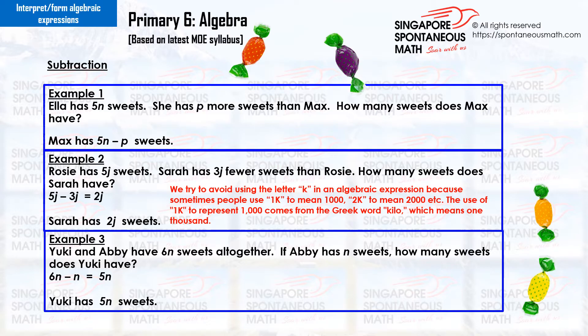We try to avoid using the letter k in an algebraic expression because sometimes people use 1k to mean one thousand, 2k to mean two thousand, etc. The use of 1k to represent one thousand comes from the Greek word kilo, which means one thousand.